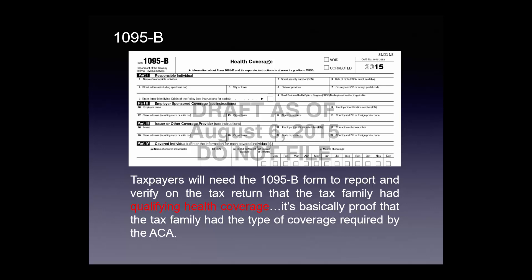The 1095-B requirement: this year taxpayers are going to need the 1095-B form to report and verify on the tax return that the tax family had qualifying health coverage. This form is essentially proof that the tax family had the type of coverage required by the Affordable Care Act.